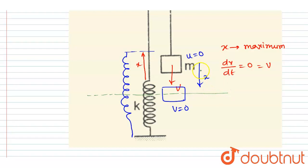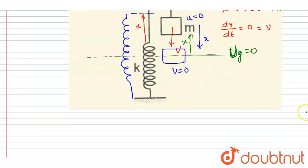So if I draw a line, you can see this block is at a height of x initially and finally it is at this position. Let's suppose at this position the gravitational potential energy is zero.